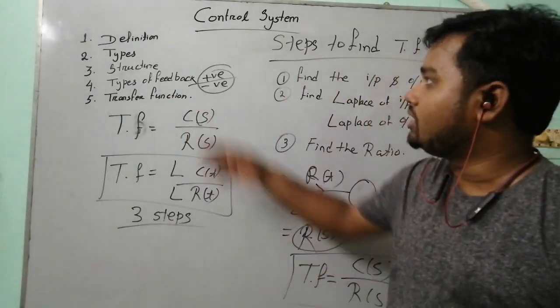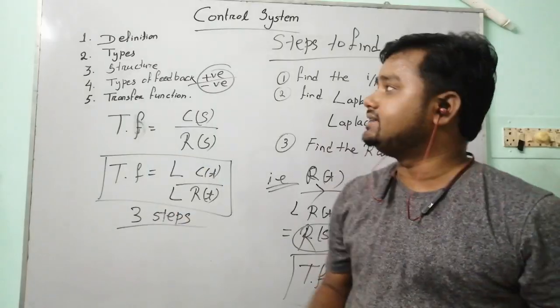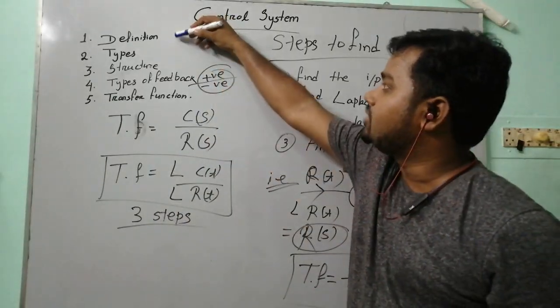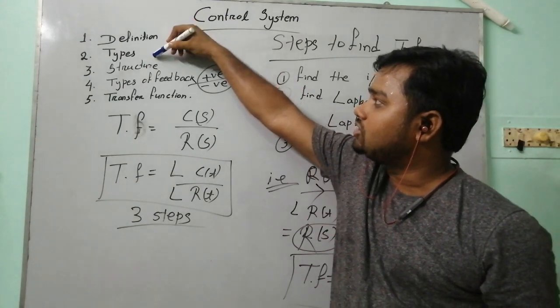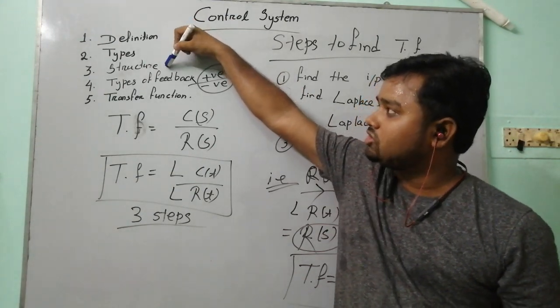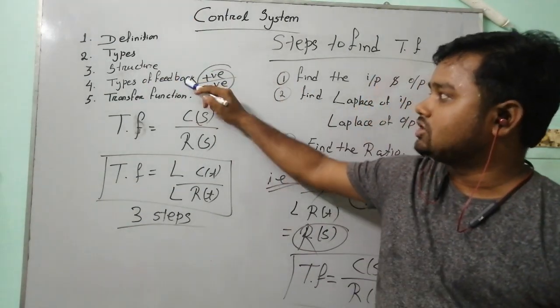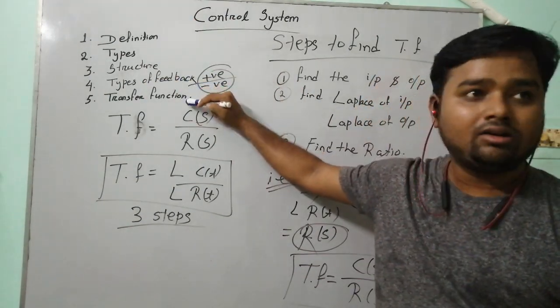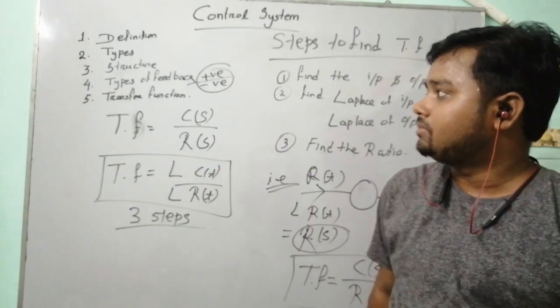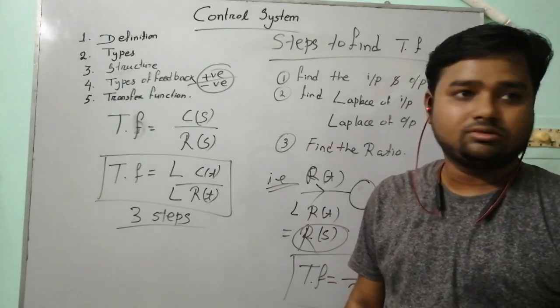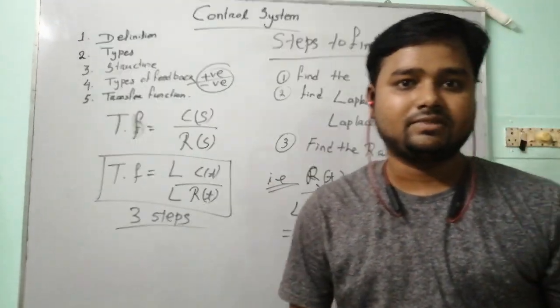The class is now over. We have covered the definition of a control system, types of control system, structure of a control system, types of feedback, and the transfer function. Thank you.